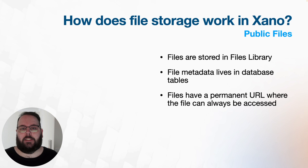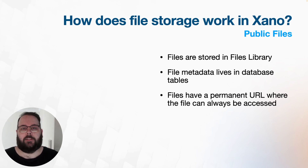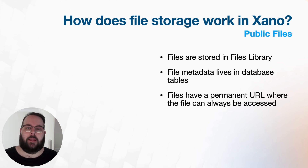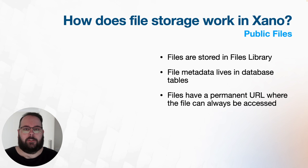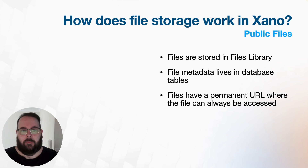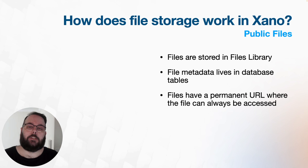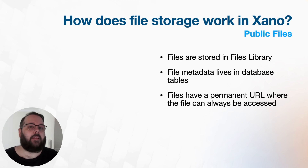First, let's talk about how file storage works in Xano. For your public files, the files are stored in your Xano public files library. The file metadata — which includes file type, file size, and a URL to the file — is stored in your Xano database, and then your APIs can return those URLs to those files. Those URLs are always publicly accessible, which means that if somebody saves the URL to one of those files, they can always access it until you delete it.